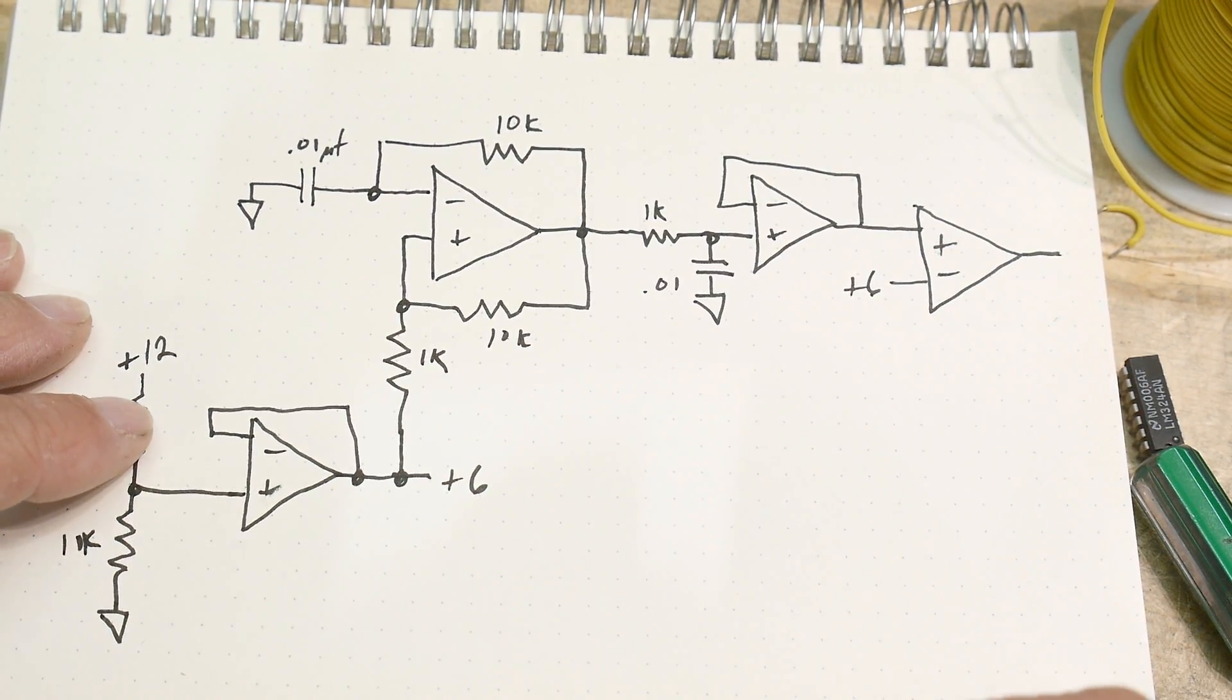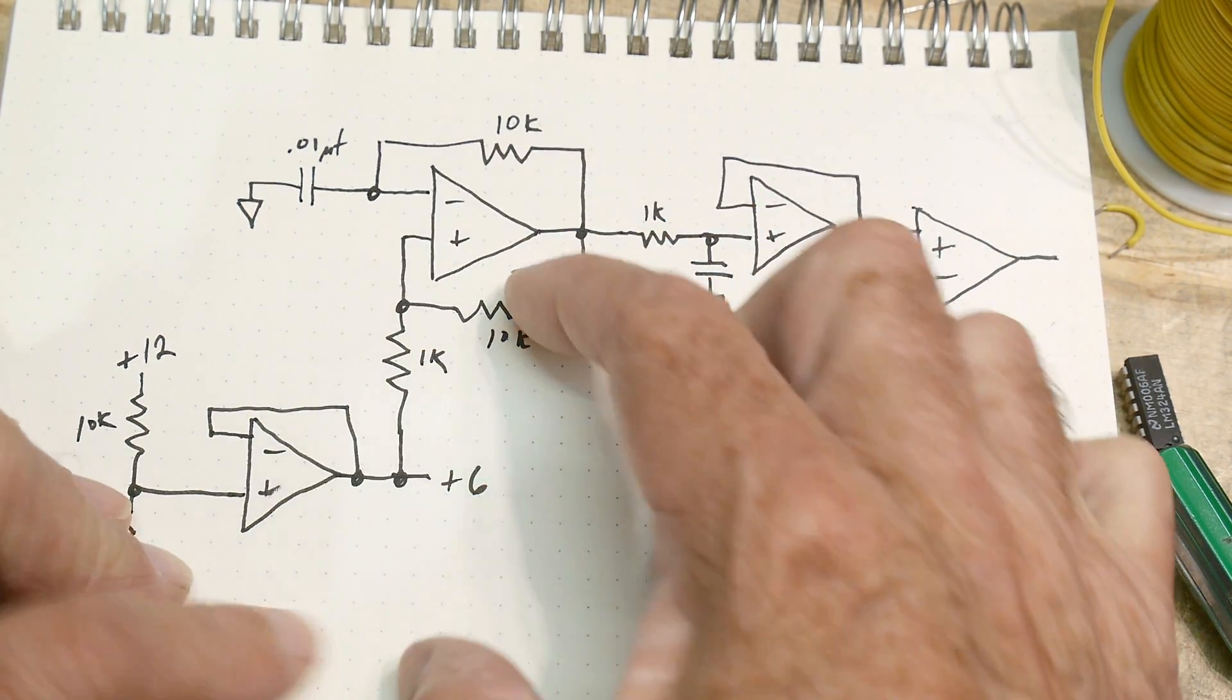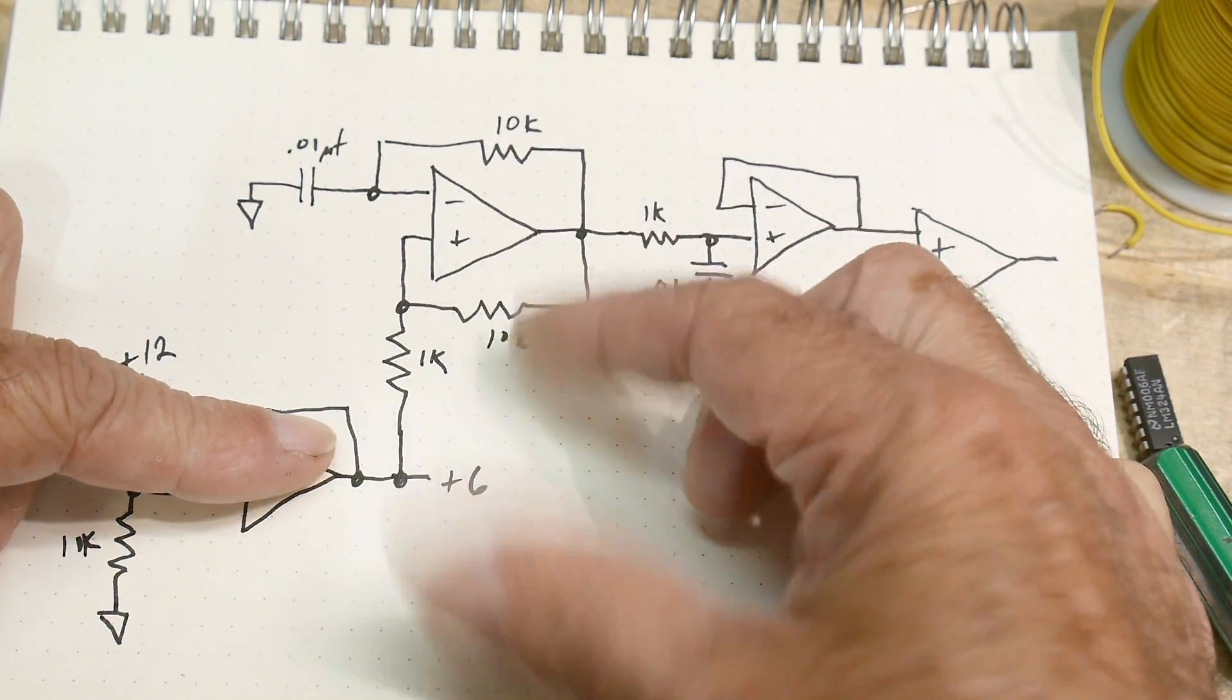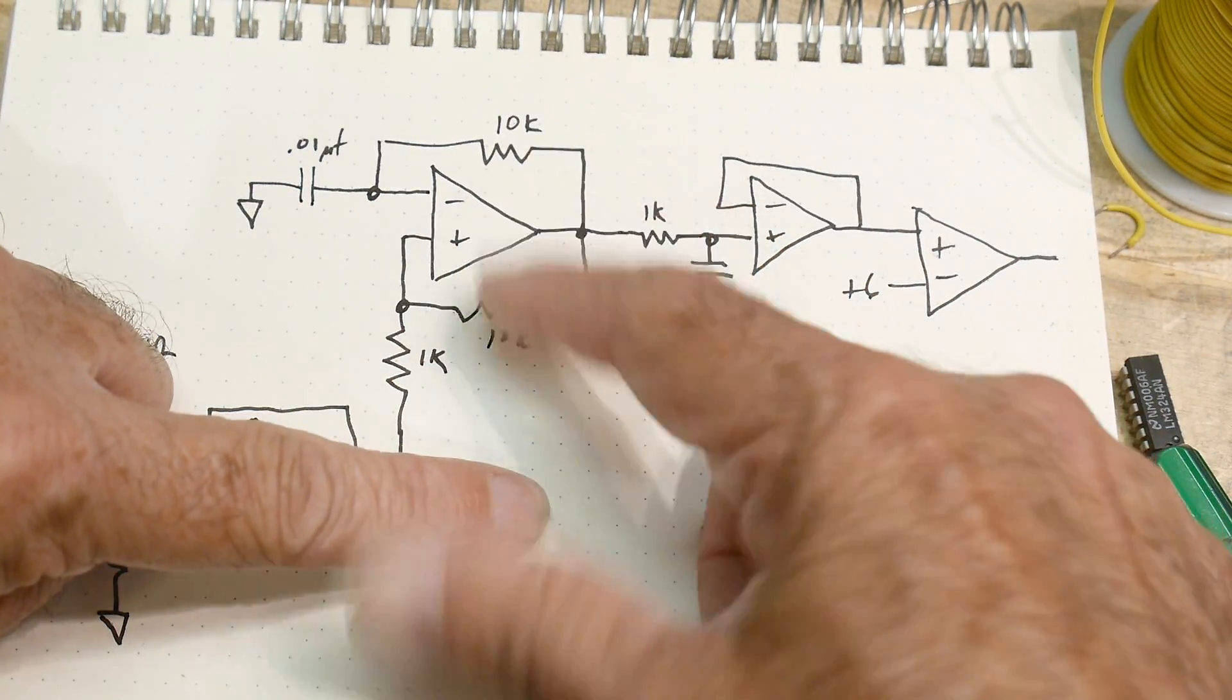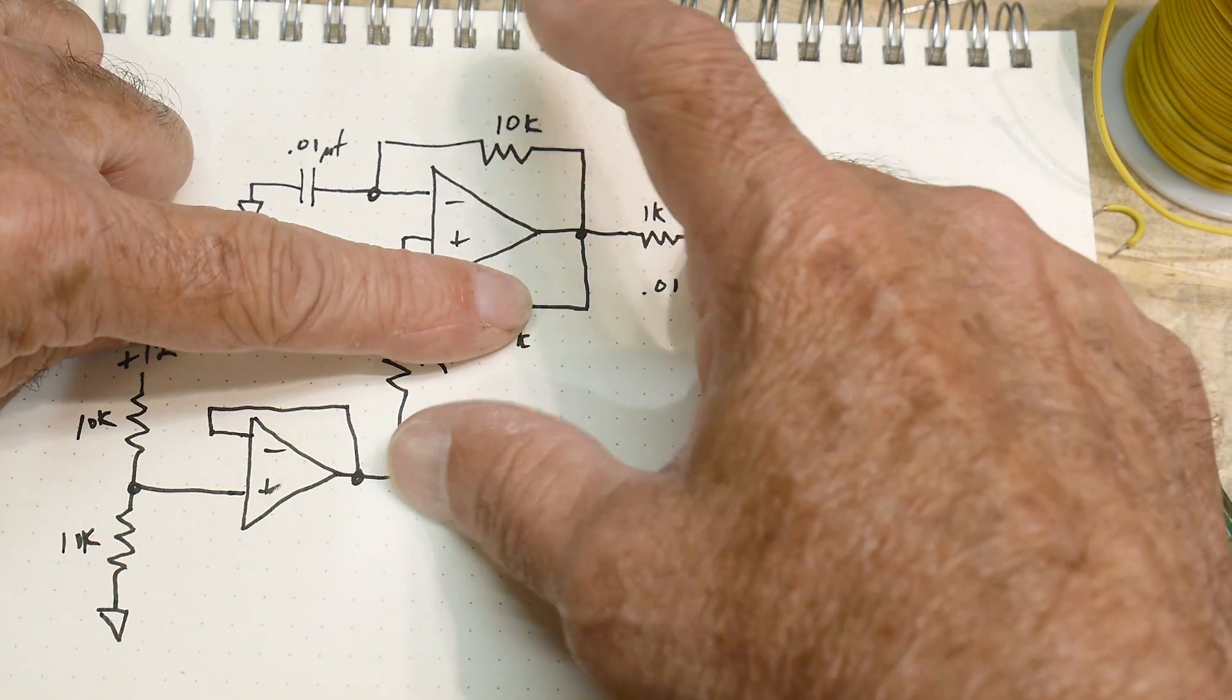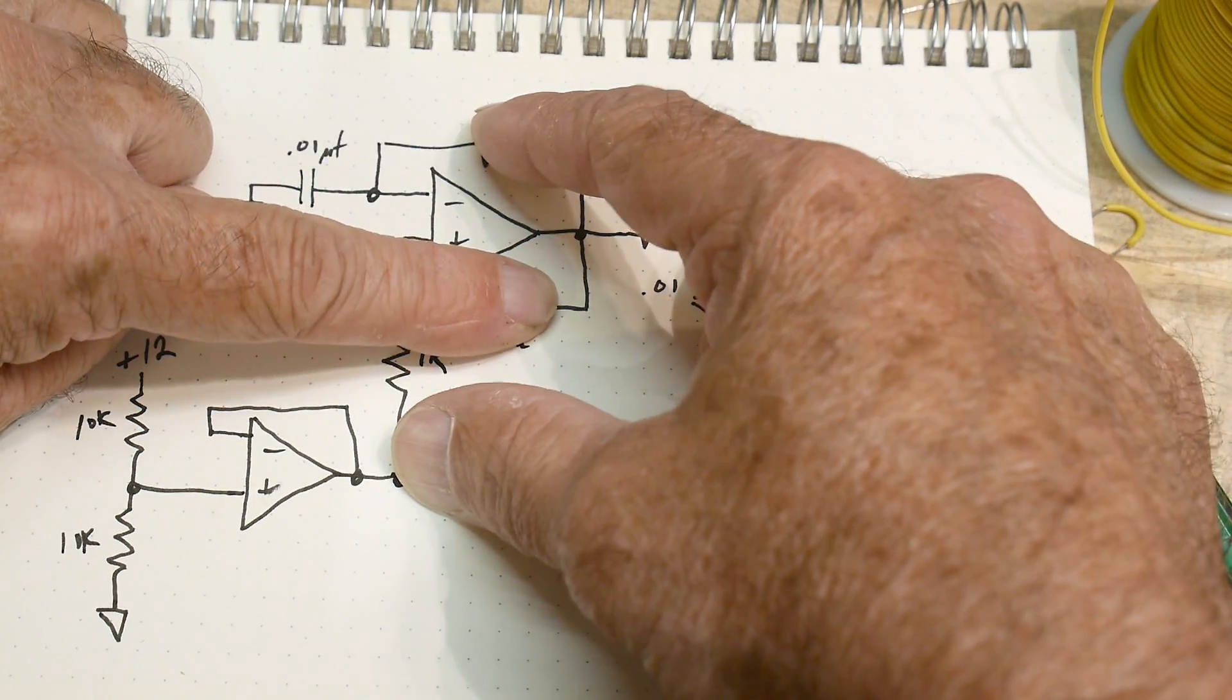Whenever you use a voltage system where it's zero and a voltage, you still need to have a middle reference. You usually have plus and minus voltages and ground, but since you don't have that, you've moved it all up. You need to have 6 volts in the middle, a ground reference that's 6 volts, and then the op amp can do its stuff.